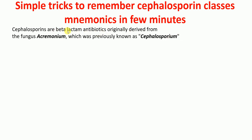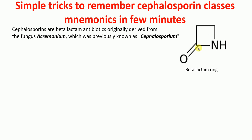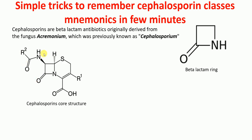So what is this beta-lactam ring? The simplest structure of the beta-lactam ring is shown here. These cephalosporins have a beta-lactam ring, like the penicillins, which also have the beta-lactam ring. This picture here shows the cephalosporin core structure. If you look at this structure carefully, you will see this beta-lactam ring, and that's why they are called beta-lactam antibiotics.